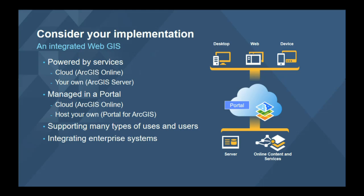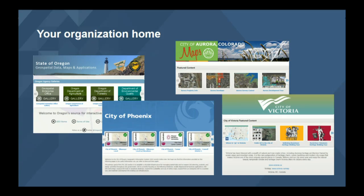Take a pause and think about the different things you need to integrate, then decide whether to implement your Web GIS entirely in the cloud, entirely on-premises, or a combination. I typically recommend the cloud as a great place to start unless there are strong reasons to implement on-premises, because that's infrastructure you have to manage. Your organization home is the most visible part of what you do as a GIS organization in this Web GIS world, and people do judge books by their covers. Spending time crafting a nice-looking organization homepage is step number one.